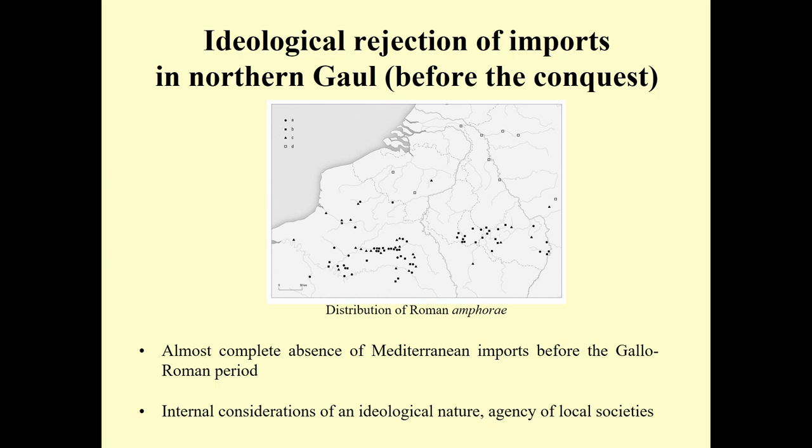This distribution map of Roman amphorae makes it very clear that finds concentrate in the southern regions of Northern Gaul but are not found in the north. The dots visible in the north are already from the post-conquest period, mostly associated with Roman military establishment. Before the Caesarian Conquest, we see an almost complete absence of Mediterranean and Roman imports in the northern part of this region.